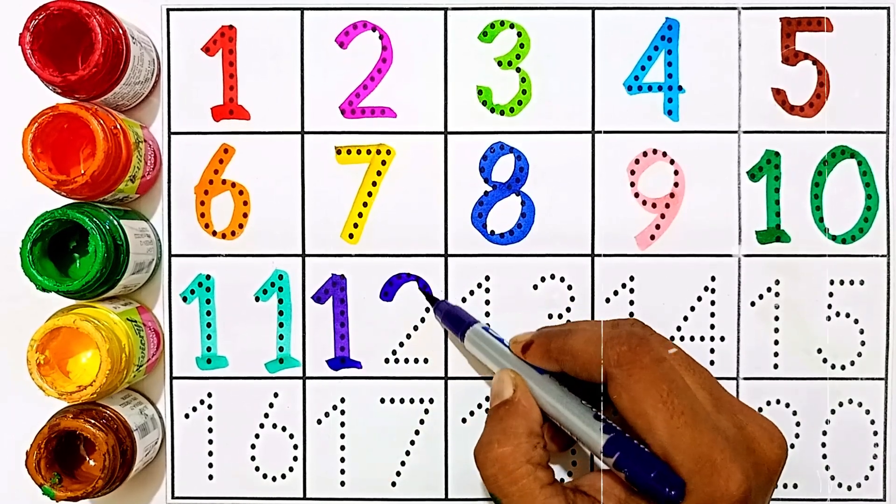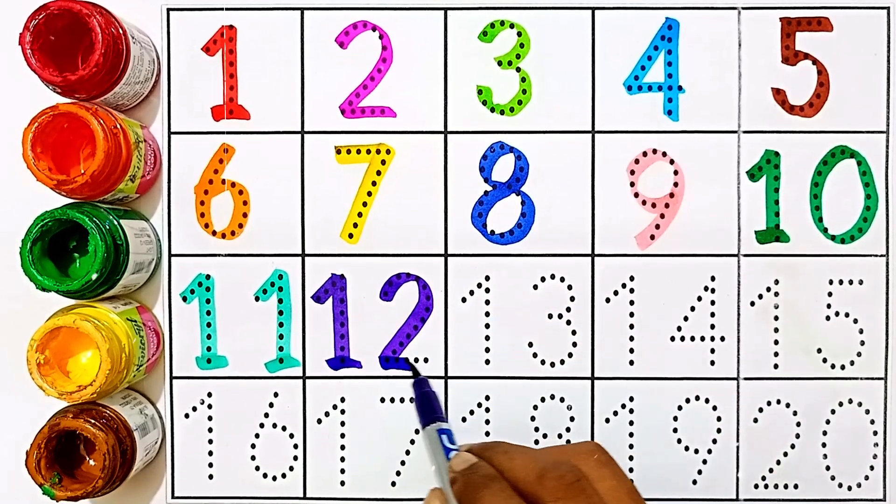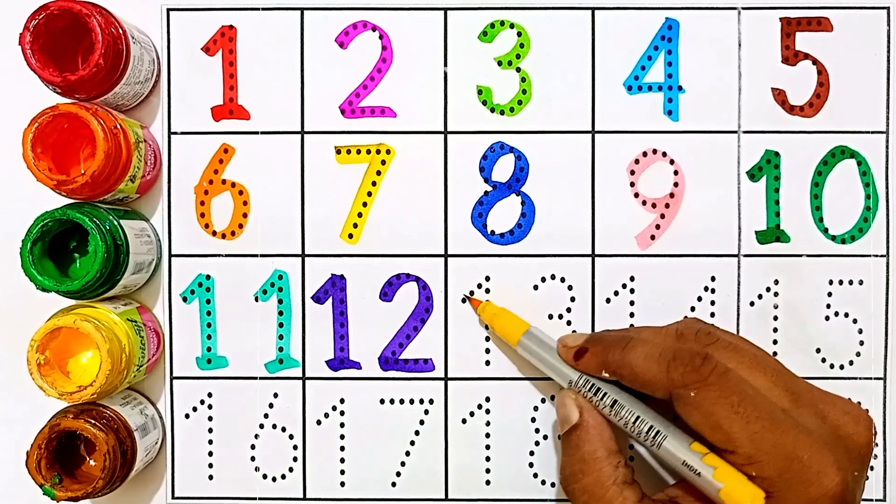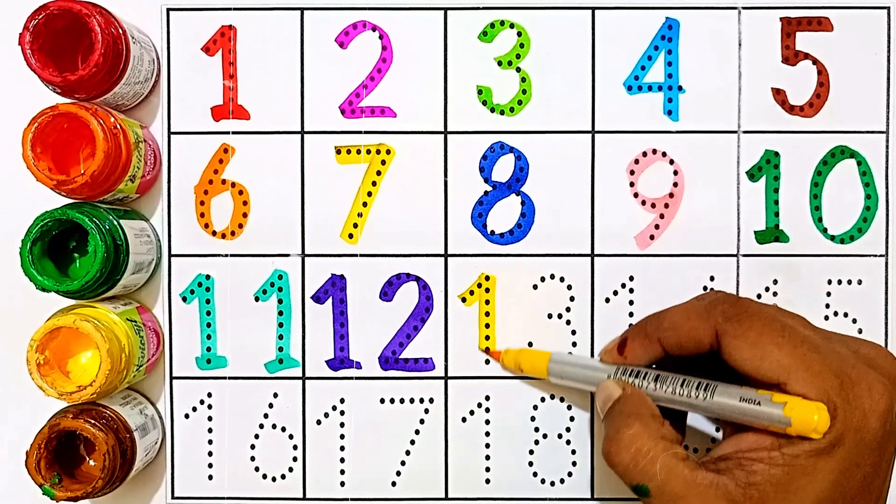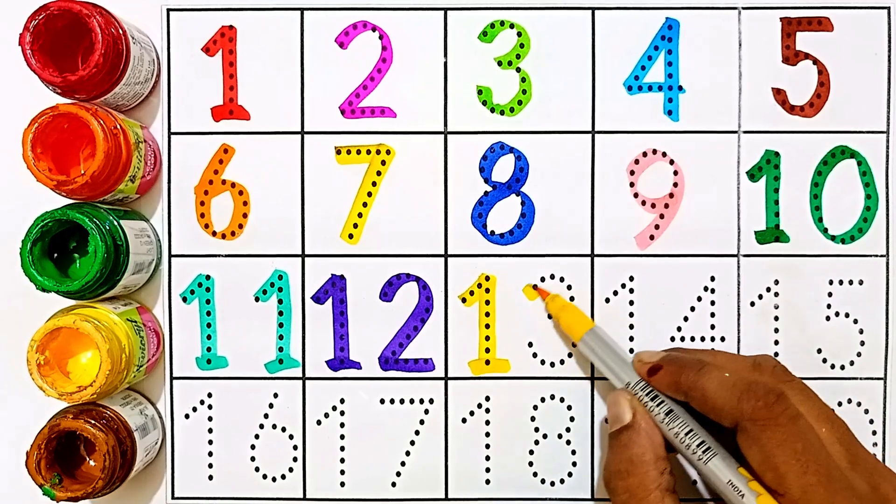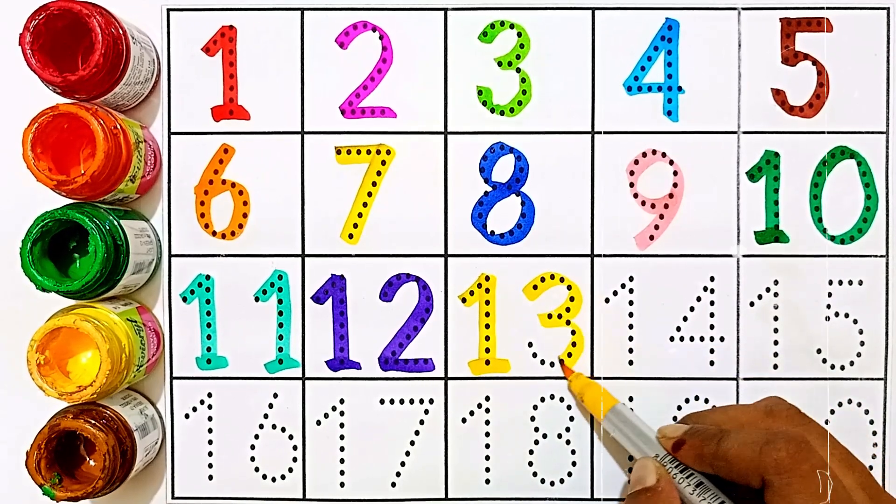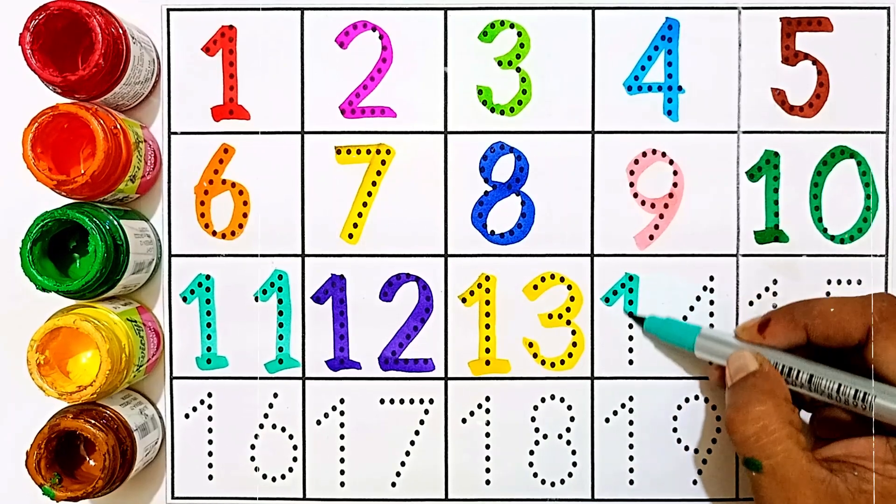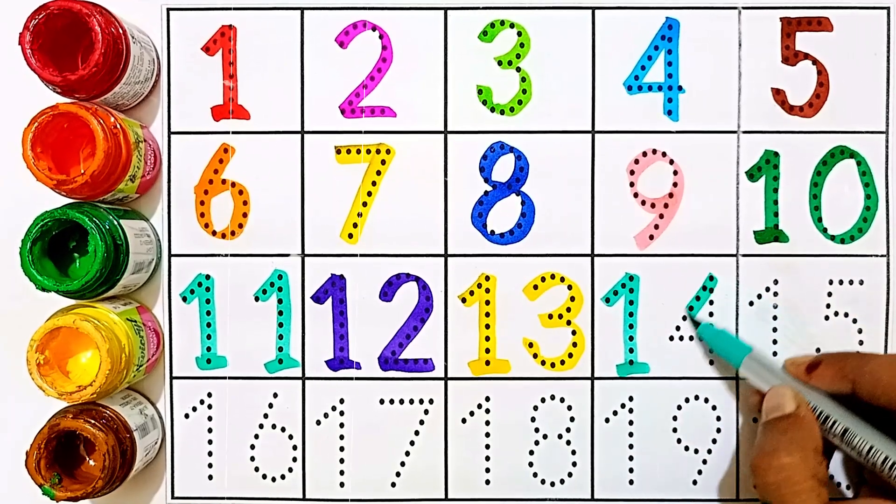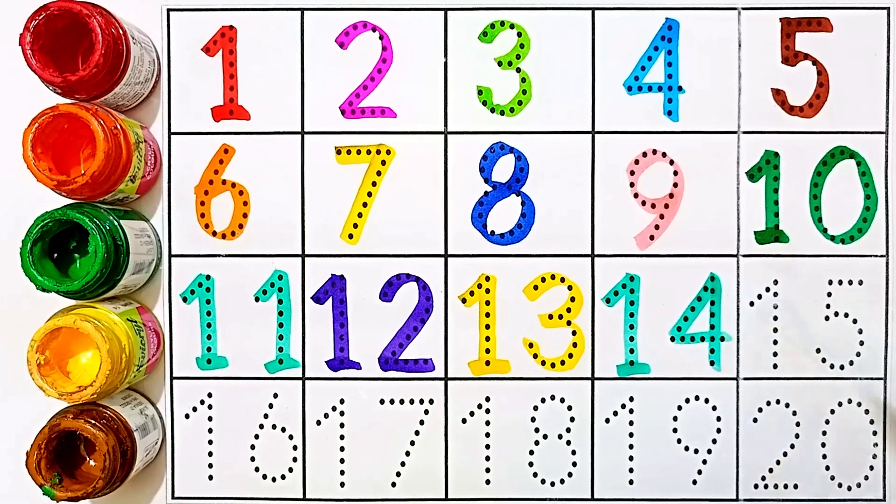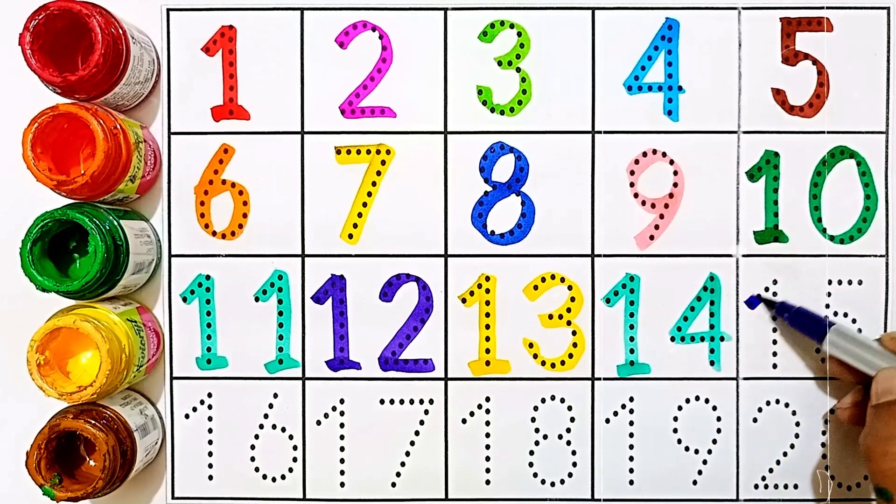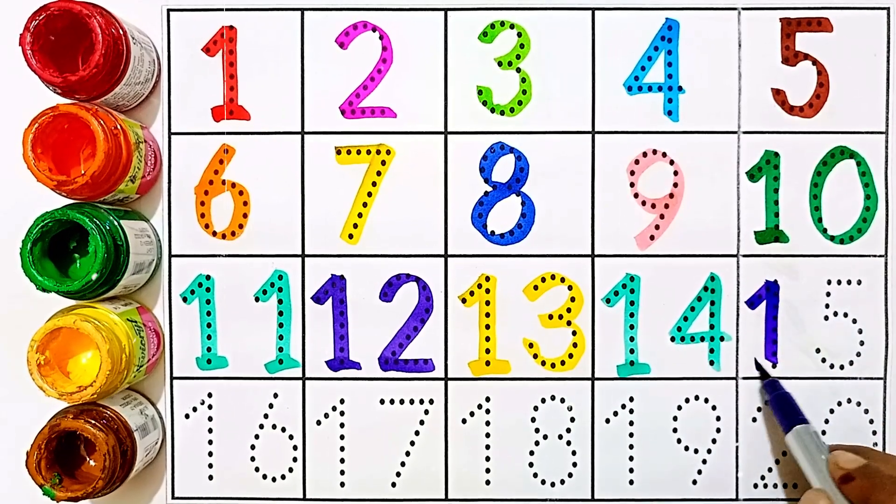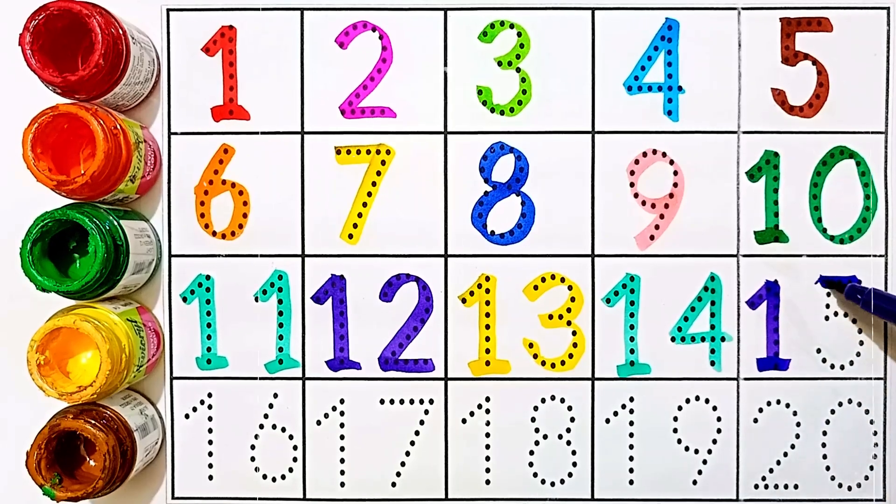One and two, twelve. Thirteen, one and three, thirteen. Fourteen, one and four, fourteen. Fifteen, one and five, fifteen.